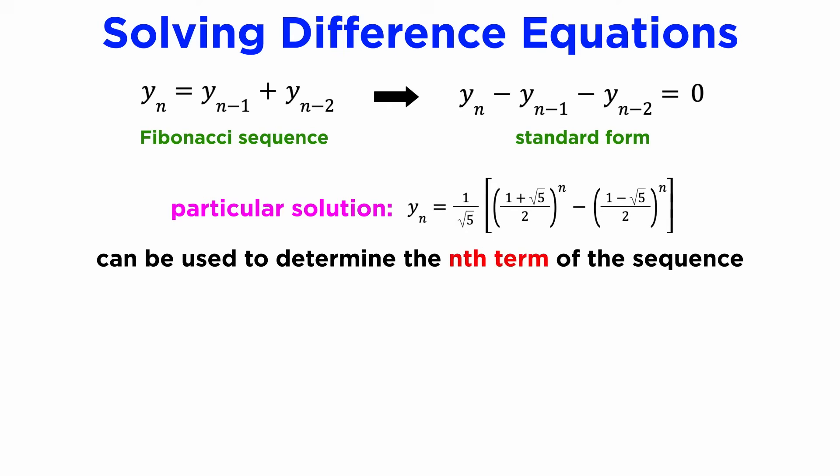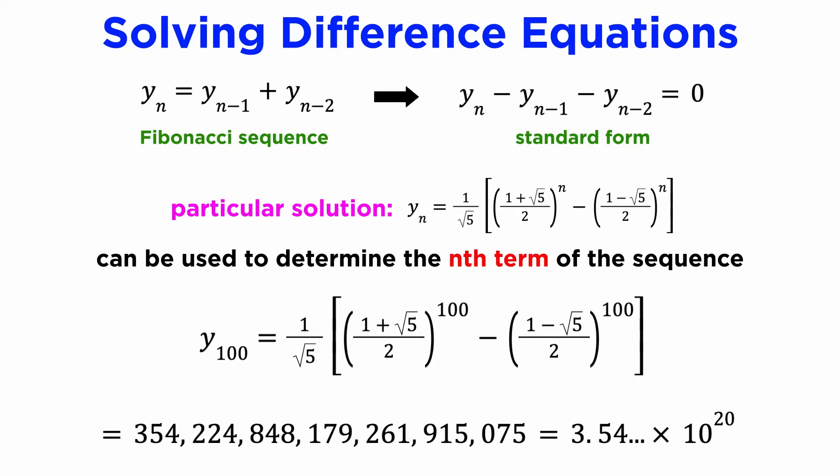This is an explicit formula for the nth term of our Fibonacci sequence, and we can use it to instantly evaluate any term, such as n equals 100, which produces this very large number, which would have taken a long time to get if we were just adding consecutive numbers.